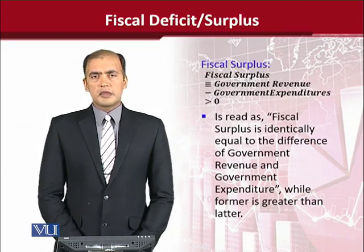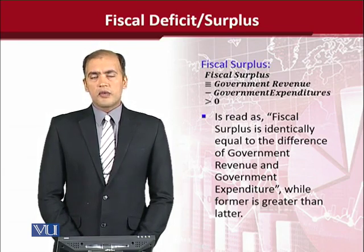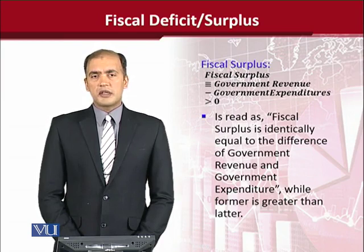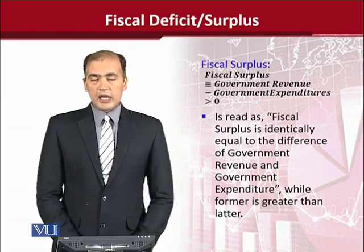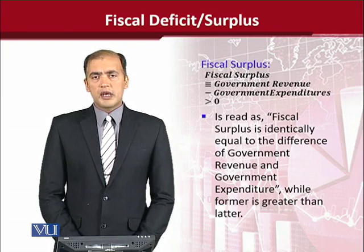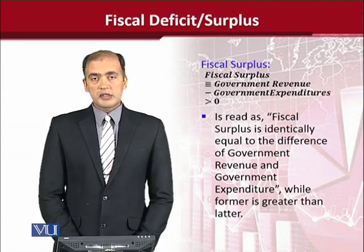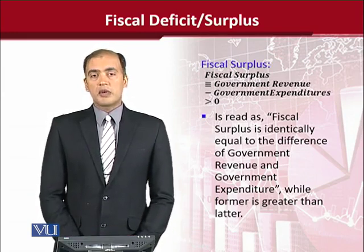Taking the other example which is Fiscal Surplus — the same equation, that is the difference of Government Revenues and Government Expenditures, will be considered. While this is a definitional equation, we can use the sign of identity. The difference is likely to be greater than 0, so we shall have Fiscal Surplus, which is identically equal to the difference of the two, while the former is greater than the latter.